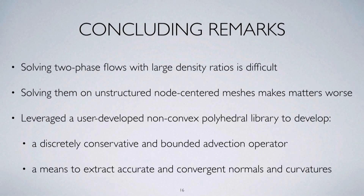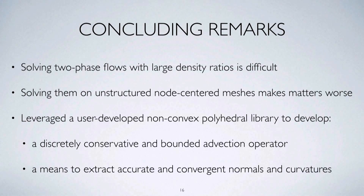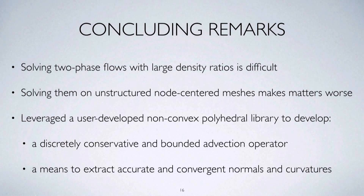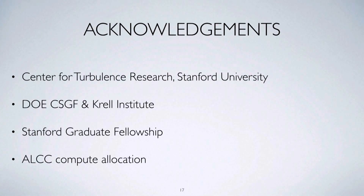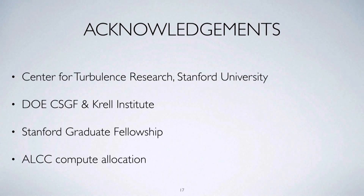In conclusion, solving two-phase systems is hard, and when the density ratio is large — as it is for fuel combustion — it's really bad. Unstructured meshes are particularly painful, with no nice properties to take advantage of. To address this, I used a lower-order topology representation of the interface and a non-convex polyhedral library to create discretely bounded, conservative, and accurate geometric advection operators, plus a convergent method to get normals and curvatures for good forcing. I'd like to thank my colleagues at Stanford, the DOE, and the Stanford Graduate Fellowship.